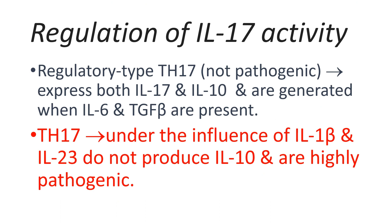Interleukin-10 and interferon-gamma are also involved in regulating interleukin-17 production in autoimmune disorders. There are regulatory-type T-Helper 17 cells that produce both interleukin-17 and interleukin-10, and are generated when interleukin-6 and transforming growth factor beta are present. These regulatory T-Helper 17 cells are not pathogenic. In contrast, T-Helper 17 cells that arise under the effect of interleukin-1-beta and interleukin-23 do not produce interleukin-10, so they are highly pathogenic.